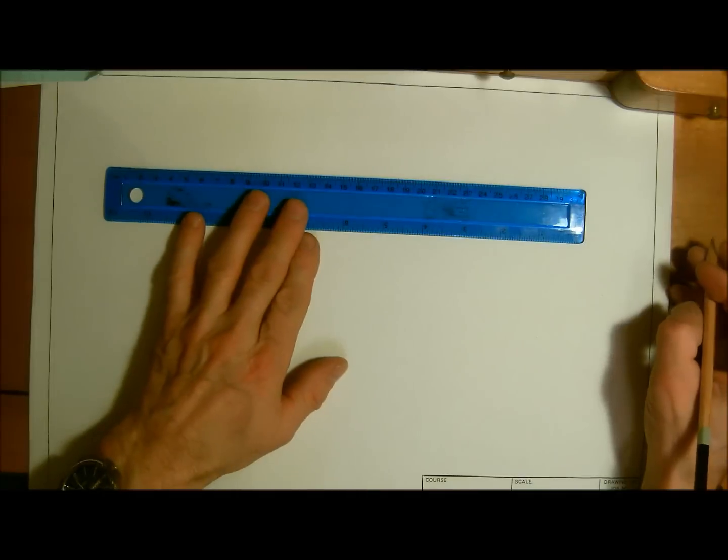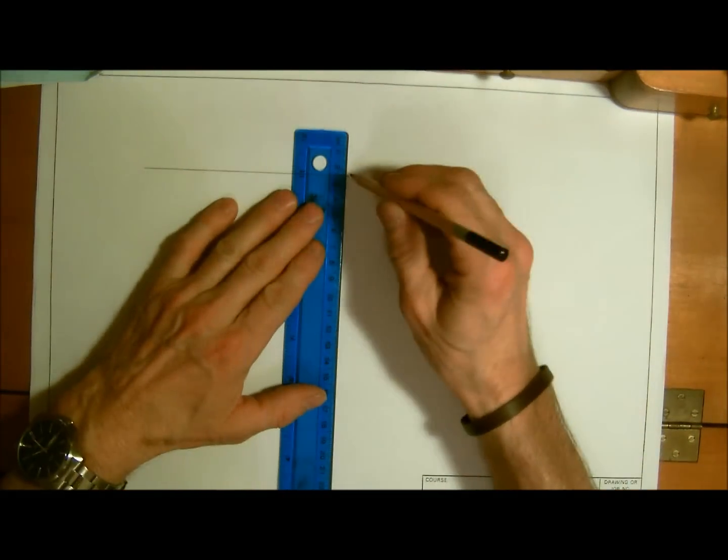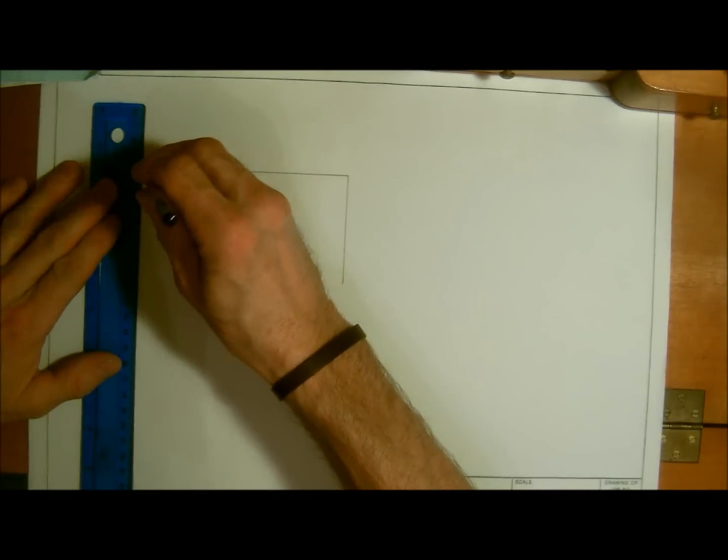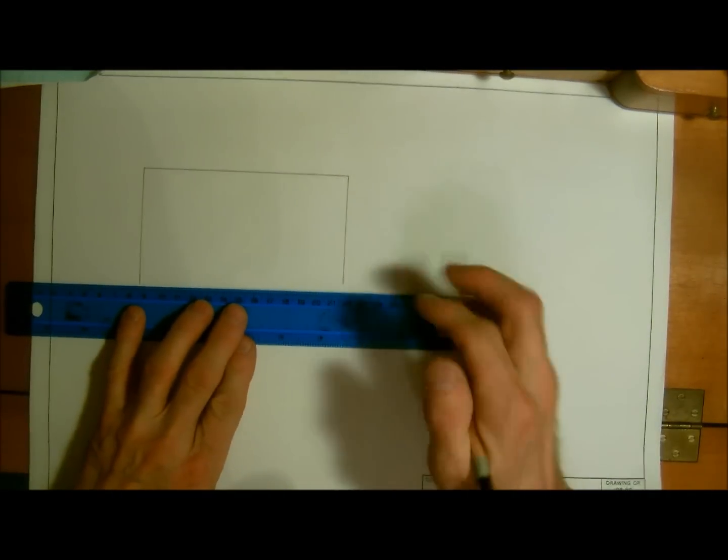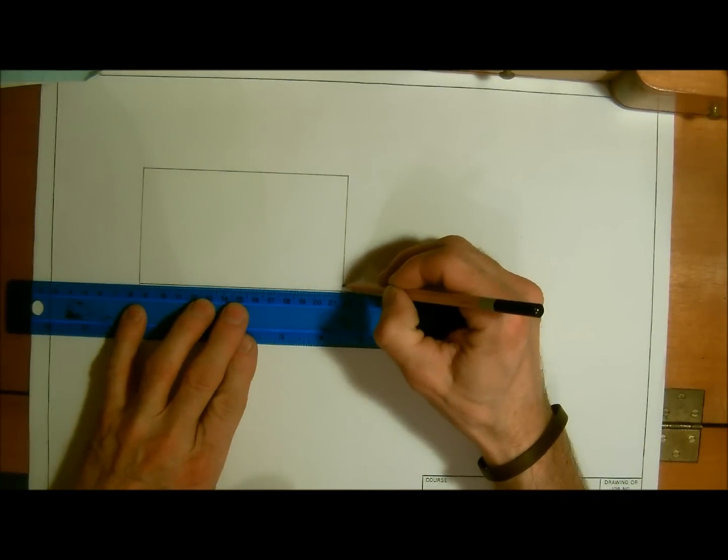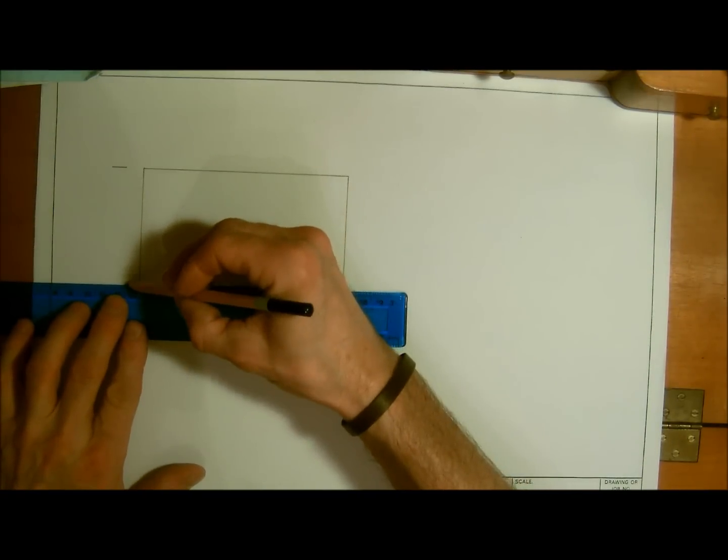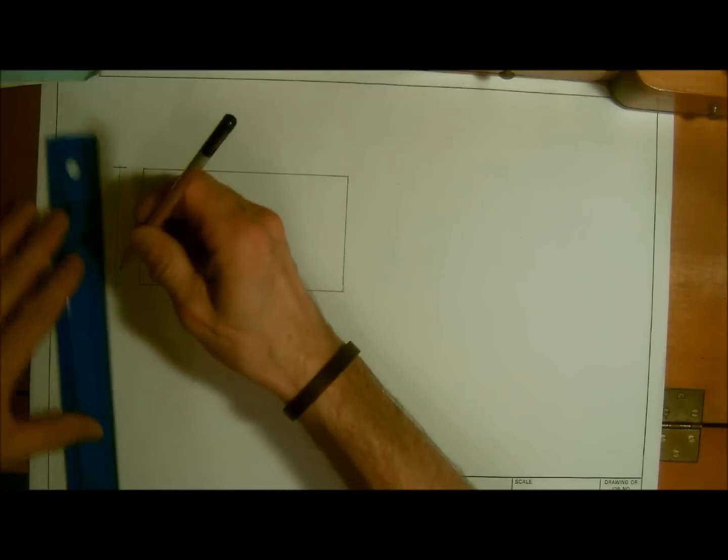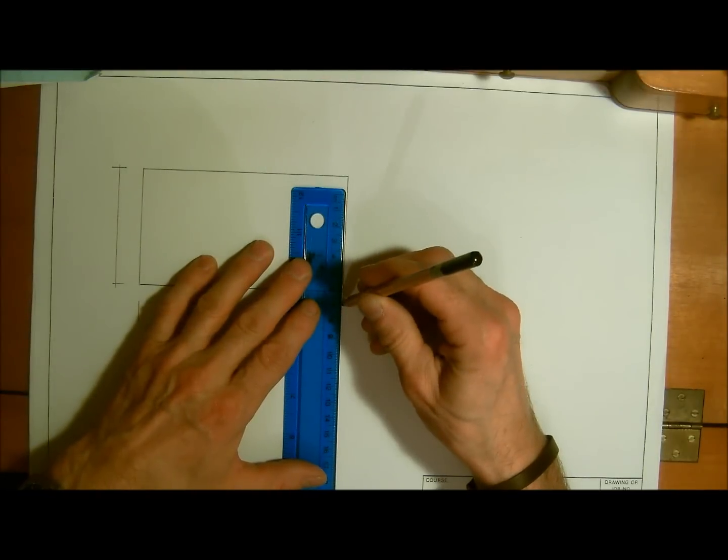Okay, so if we start first of all just by drawing ourselves what we're going to say is a little wall, and just very basically we're going to be giving ourselves two dimensions which is going to be the height of the wall just here and the length of the wall.